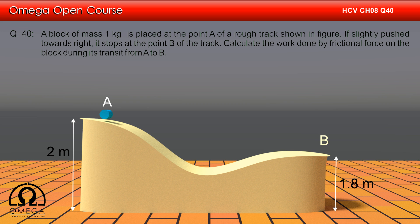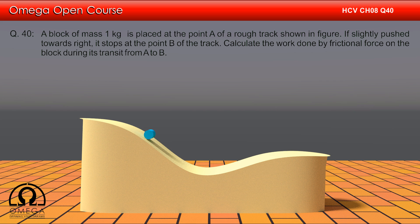A block of mass 1 kg is placed at the point A on a rough track as shown. If slightly pushed towards right, it stops at the point B of the track. Calculate the work done by the frictional force on the block during its transit from A to B.